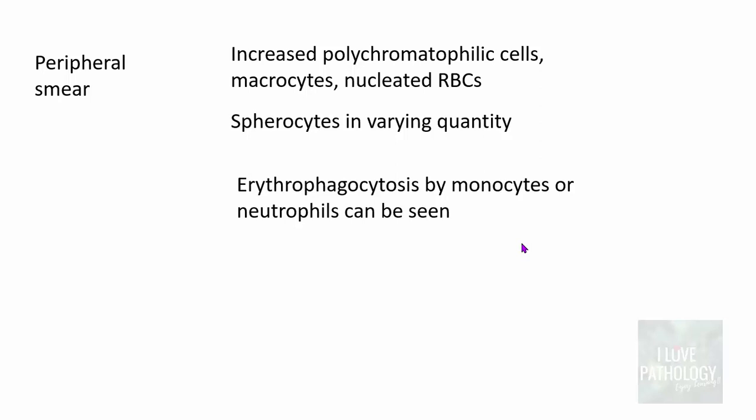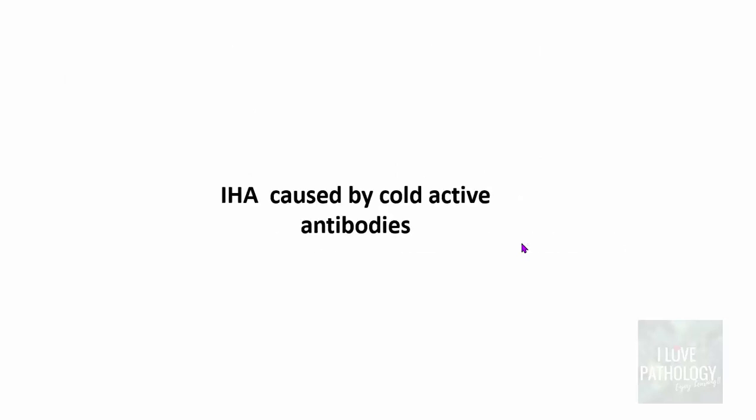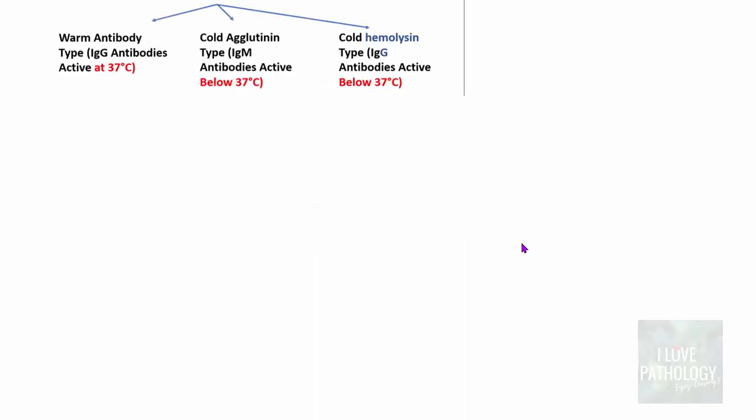Erythrophagocytosis should not normally be seen. If you observe an RBC engulfed inside a monocyte or neutrophil, you are dealing with immune hemolytic anemia — it indicates antibody coating on the RBCs. Erythrophagocytosis is always an indication of immune hemolytic anemia. Moving on to immune hemolytic anemia caused by cold active antibodies, there are two types.